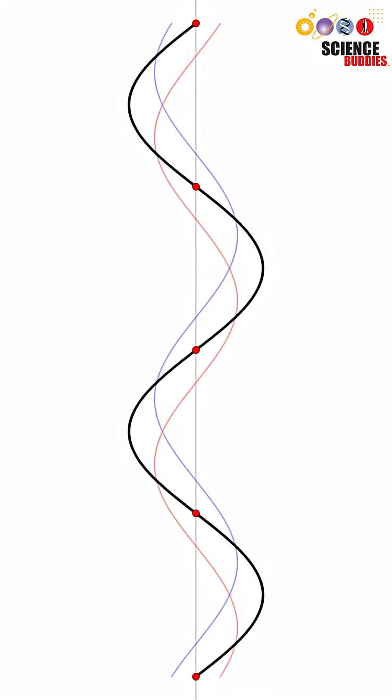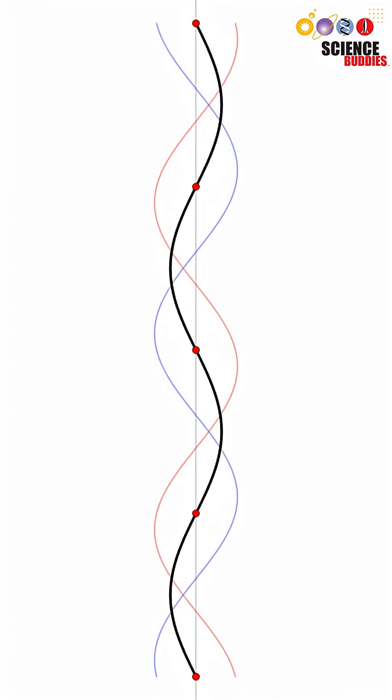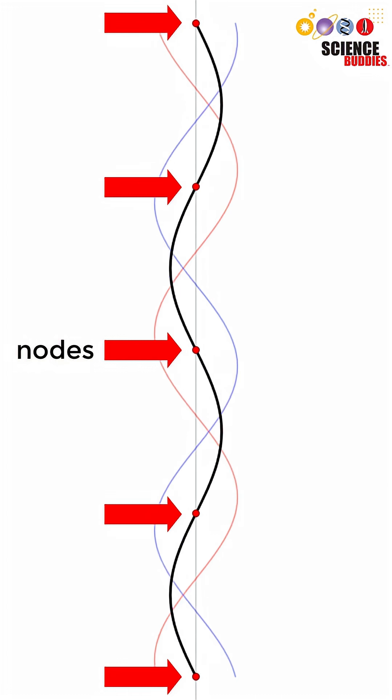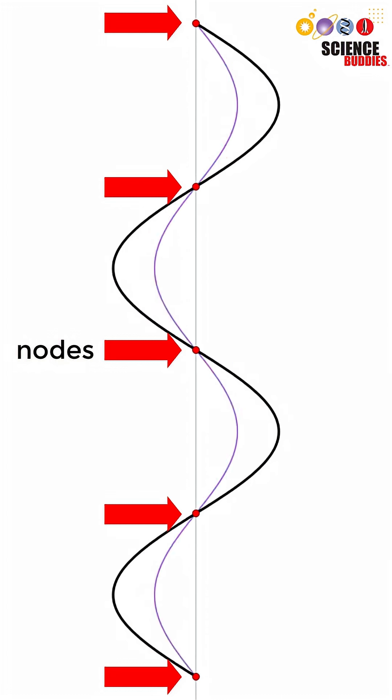When you aim two opposing waves at each other, they interfere and their amplitudes add up, represented by the black line. However, they can also create a standing wave with nodes represented by the red dots or regions of constant air pressure.